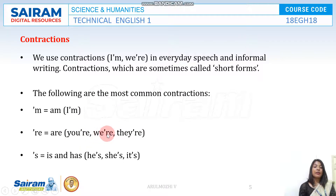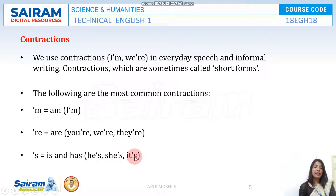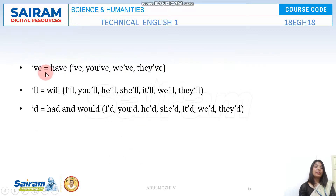'Is' and 'has' can both be contracted with an apostrophe S. For example, 'she has' becomes 'she's.' 'It is' becomes 'it's.' These look the same in writing, so context tells you whether the contraction represents 'is' or 'has.'